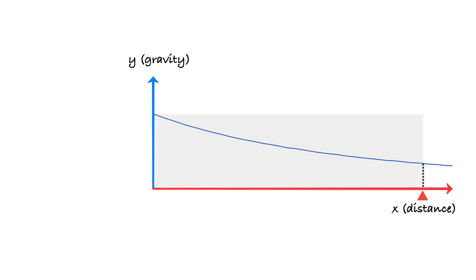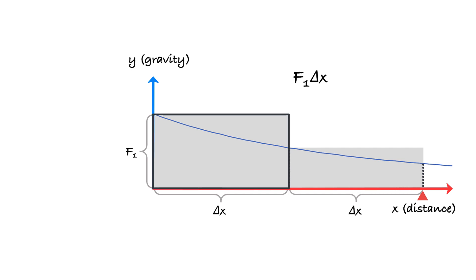But let's try something else then. Let's split the trajectory of the rock into two equal parts, and we will denote each one as delta x. Now we can approximate the result a bit better by first calculating the amount of work required to move the rock through the first part, and that will be f1 delta x, and then the second part, which is f2 delta x. The total work then equals the sum.